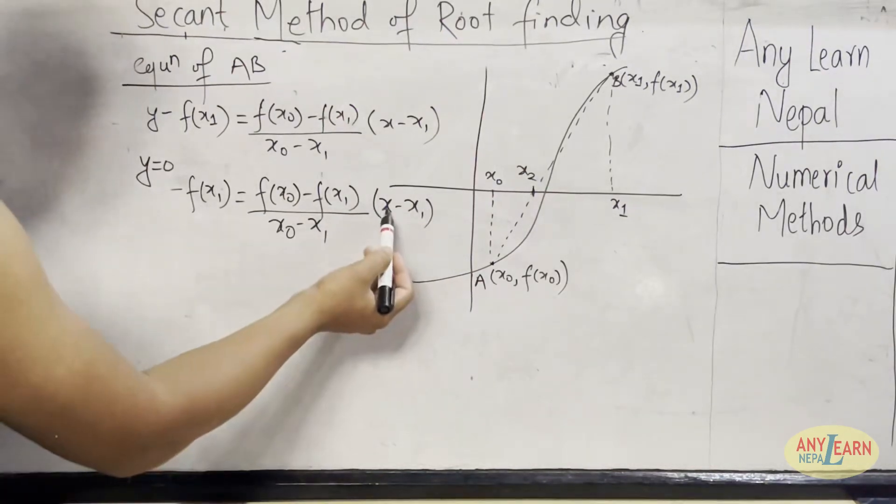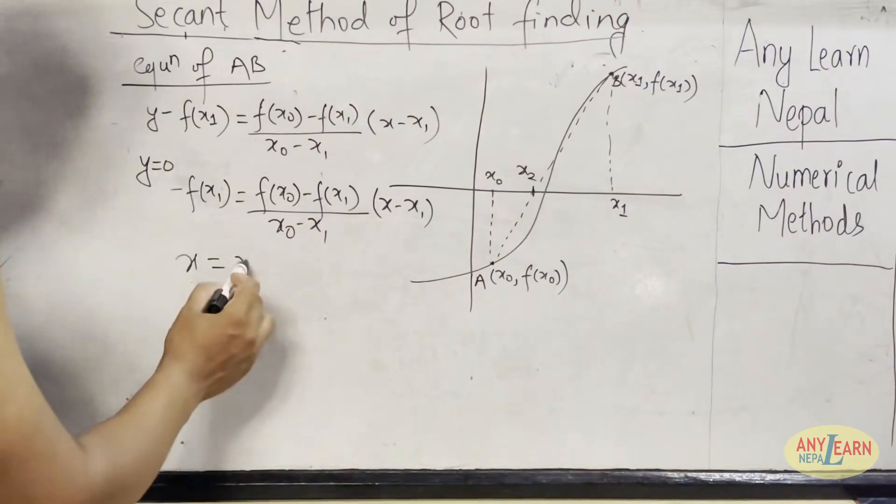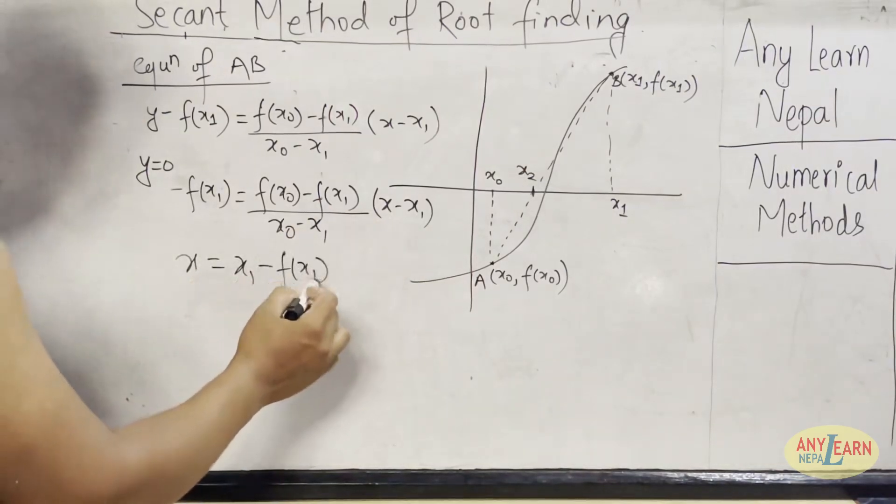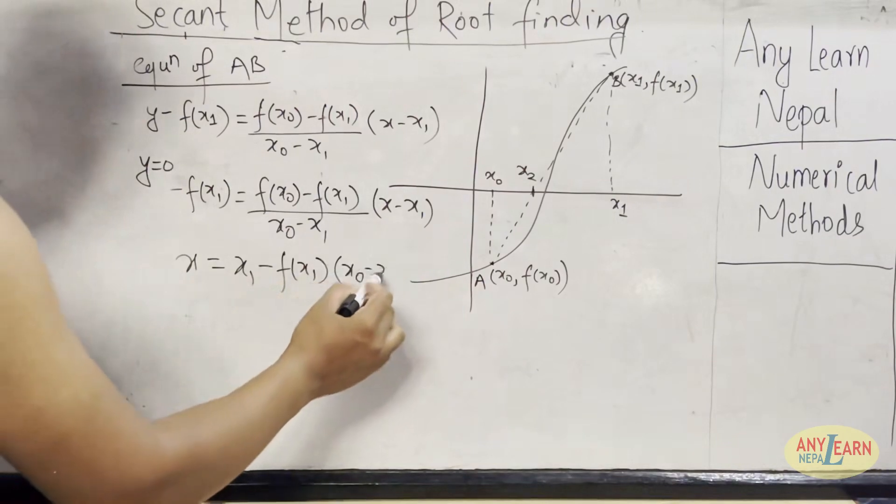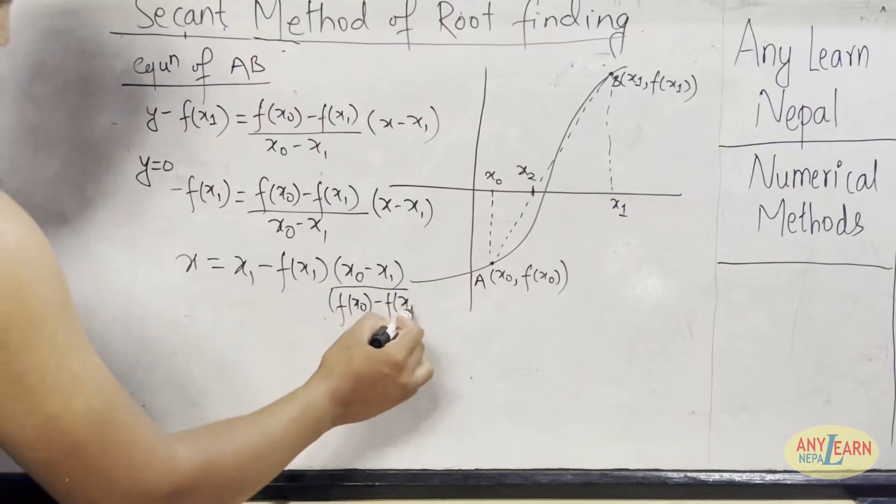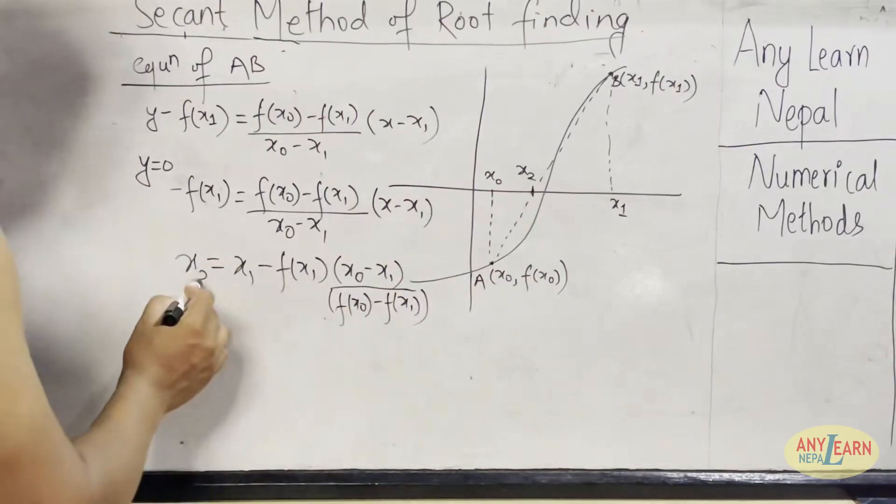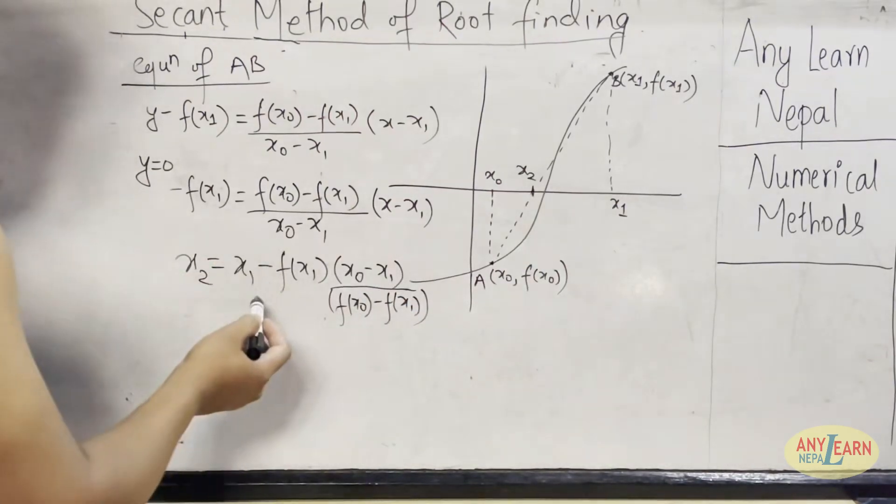So putting y equals to 0, we get minus f(x1) equals (f(x0) minus f(x1)) divided by (x0 minus x1) times (x minus x1). Now let's find this value of x. On solving, we can get x equals x1 minus f(x1) times (x0 minus x1) divided by (f(x0) minus f(x1)). Now this value of x will be x2.